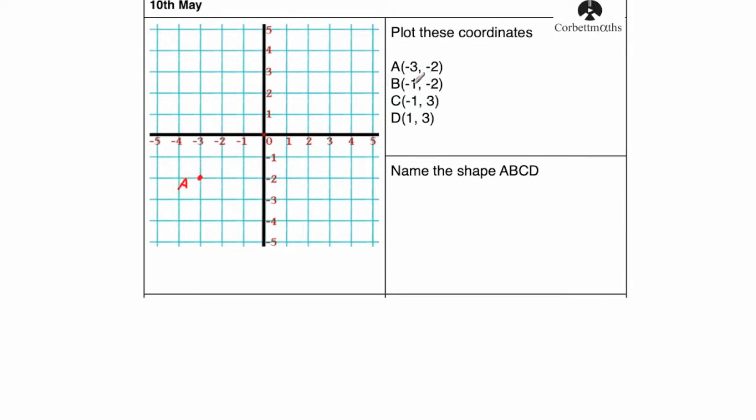B is the point minus 1, minus 2, so minus 1, minus 2 would be there. That's the point B. The point C, minus 1, 3, so it's going to be up there. And the point D is 1, 3, so 1 across 3 up there.